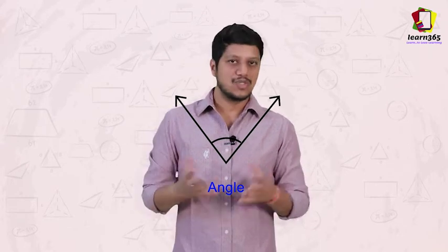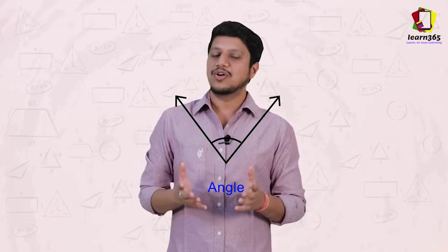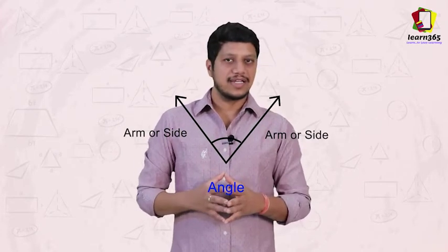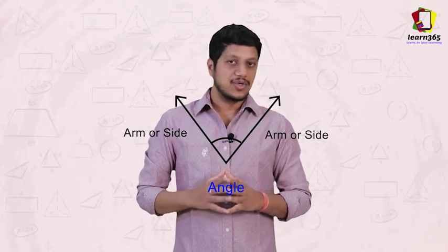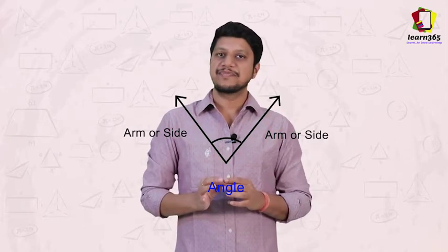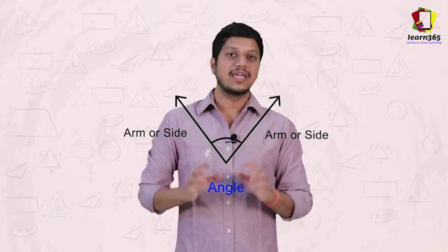This figure that I have is called as an angle. So if I have to name these two sides, these are called the arms of the angle or the sides of the angle. And you can see that there are two lines originating from this point. So this point becomes the angle.